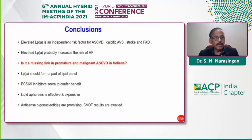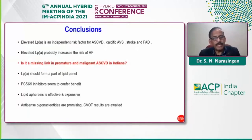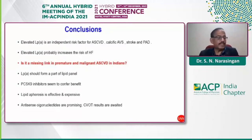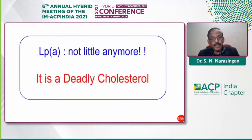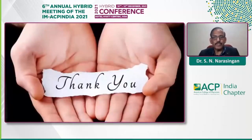In conclusion: elevated lipoprotein(a) is an independent risk factor for ASCVD, calcific aortic stenosis, stroke, and PAD; elevated levels also increase risk of heart failure. Is it a missing link in premature and malignant ASCVD in Indians? Lipoprotein(a) should form part of the lipid panel. PCSK9 inhibitors seem to confer benefit; apheresis is effective but expensive; antisense oligonucleotides are promising; and cardiovascular outcome trial results are eagerly awaited. Lipoprotein(a) is not just an LDL anymore — I consider it a deadly cholesterol.